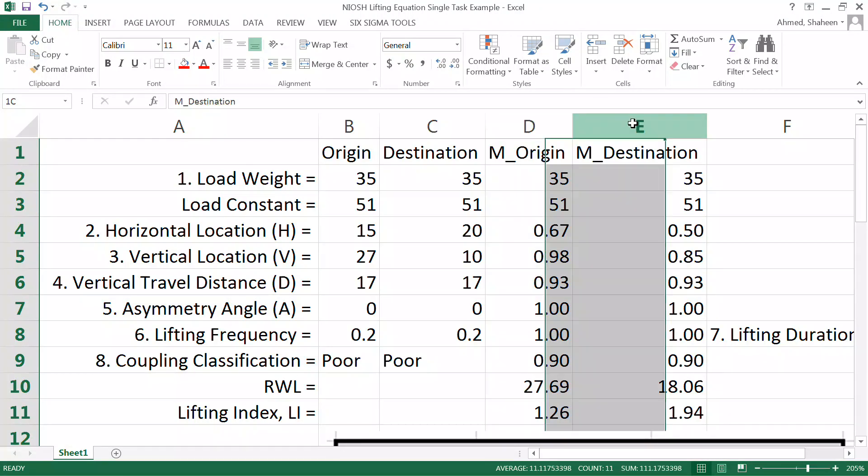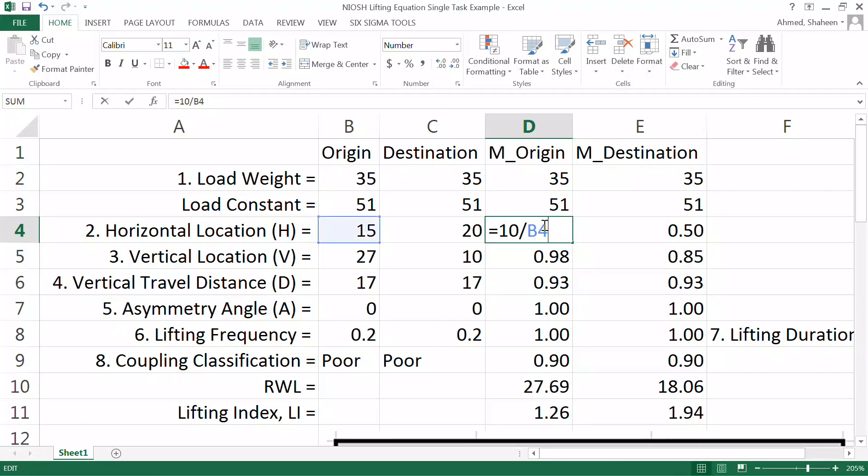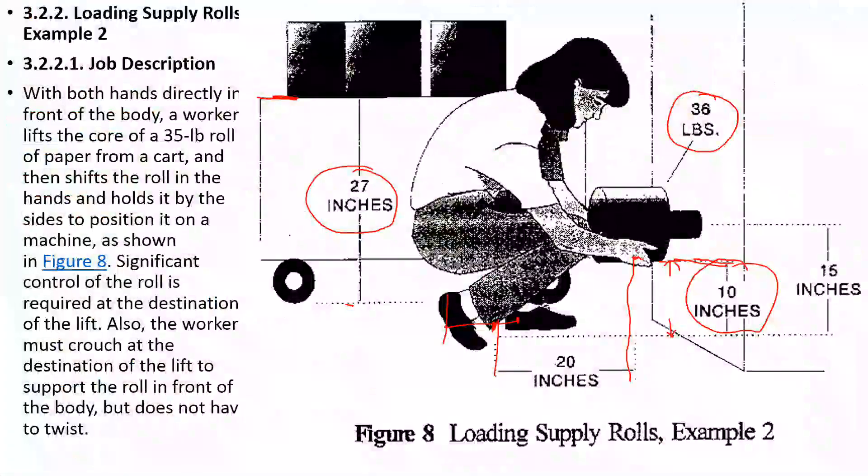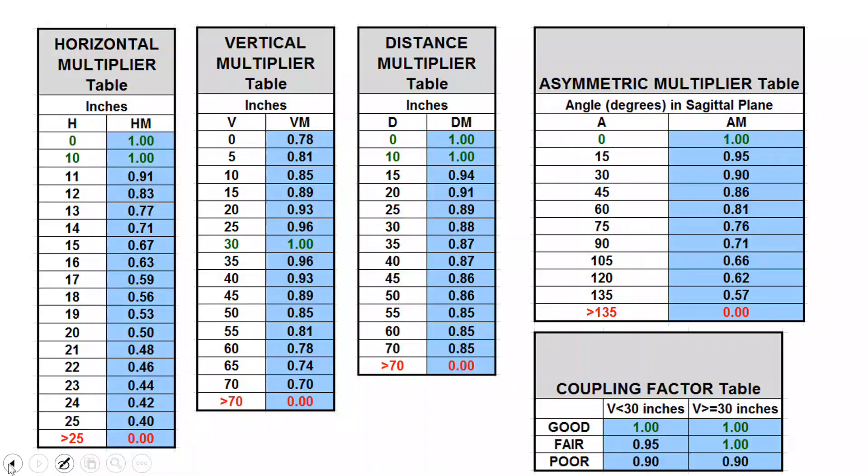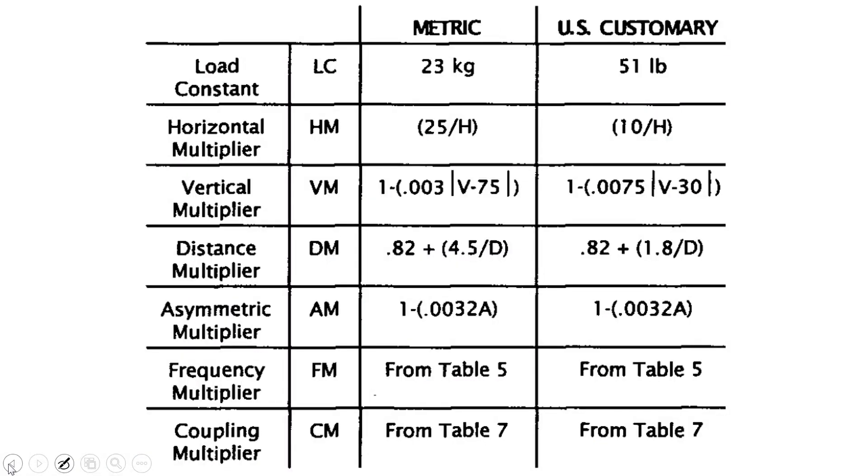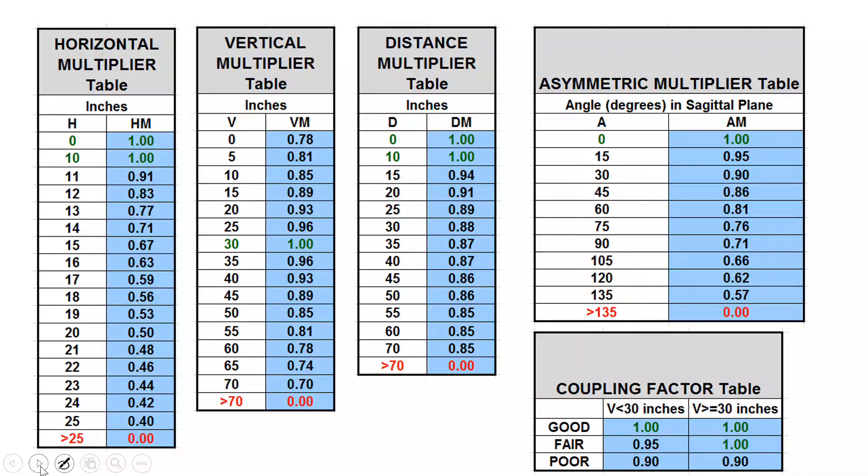To get the multipliers for the origin and destination, I have used the equations. In the earlier video, I showed you that you could use either the equations or the tables for the multiplier values. If you have access to Excel, you're probably better off writing these equations. So this is the equation I wrote in Excel to get all these multiplier values. You could also use the table. There is a link on openeducator.com where you can access this table directly from the Center for Disease Control website.